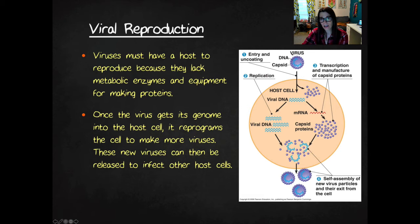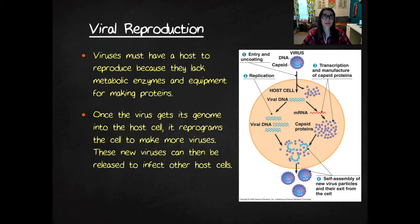You have the virus entering into the cell, and then the viral DNA is coming out and it's being replicated. Then you've got some proteins being made, and then you basically just have the nucleic acid and the proteins reforming to make new viruses, and then they exit. That's really the overview of what happens. Now it's going to look more complicated as we get into it because viruses are weird and there's a whole bunch of different types of them, and they don't all replicate in this way.